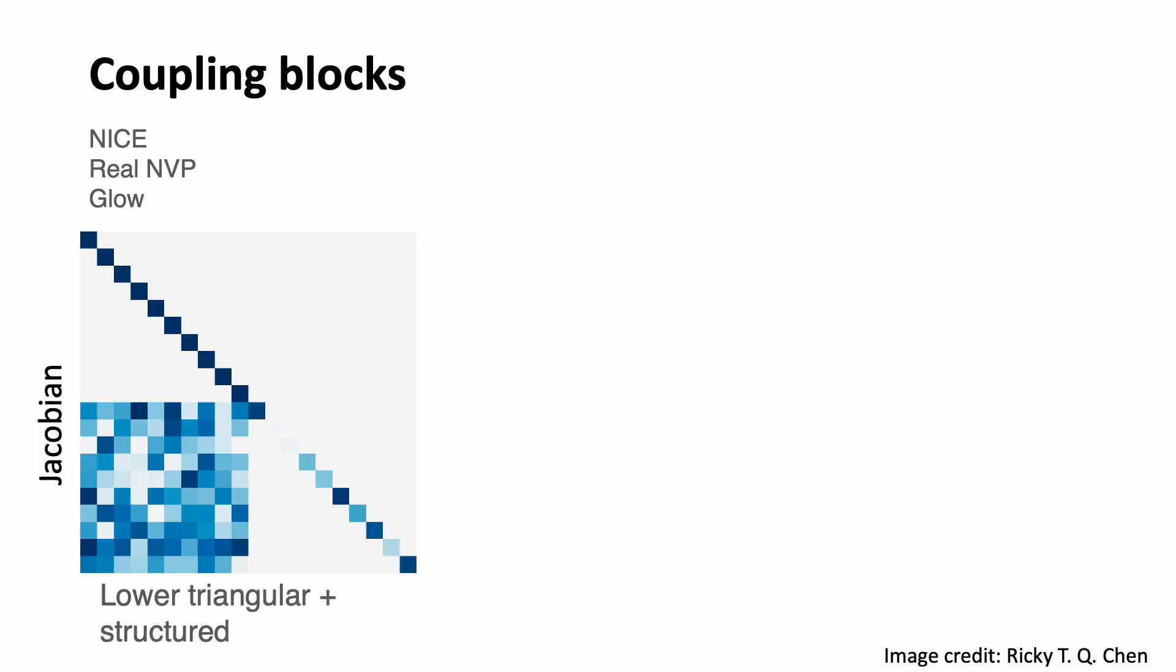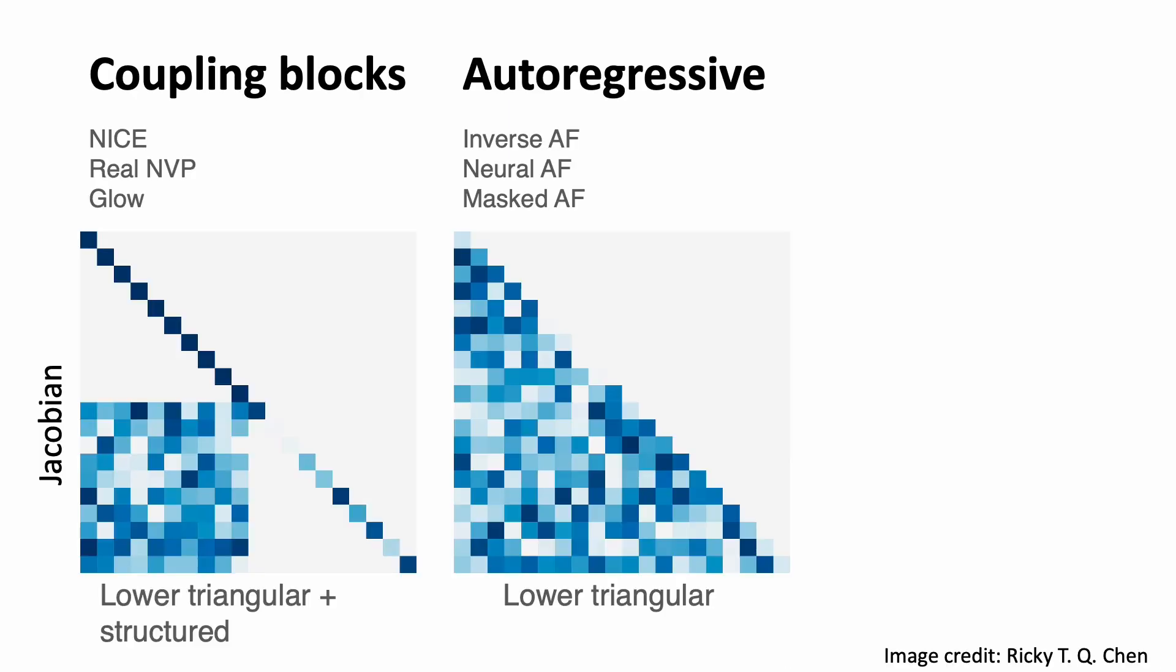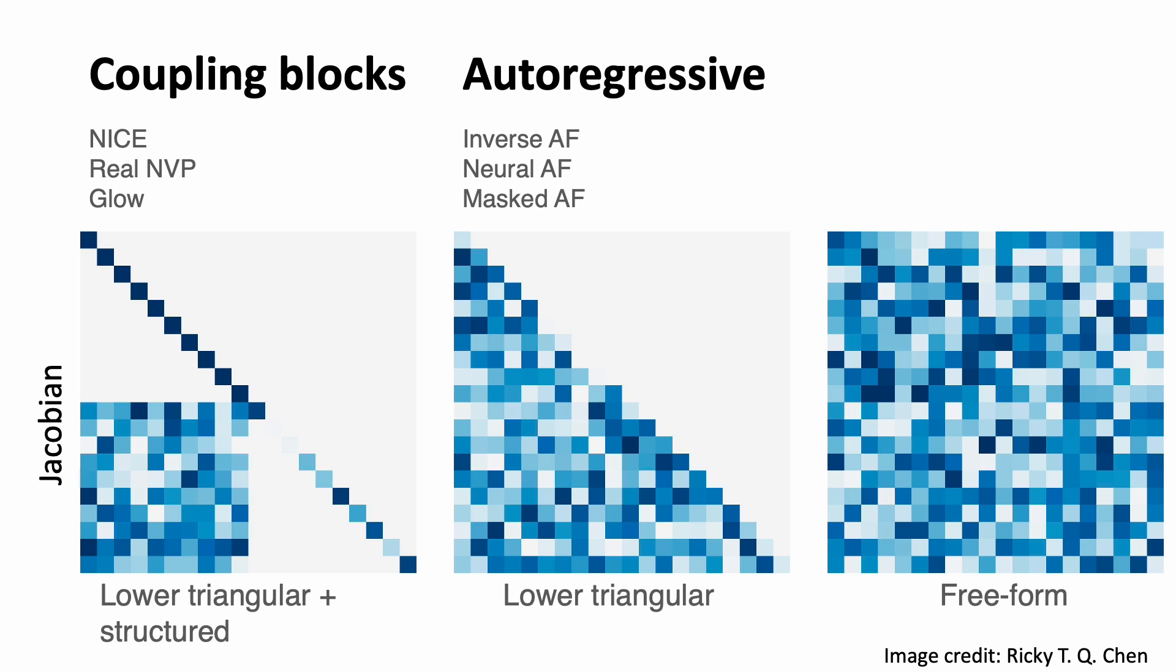So far, we have seen the coupling blocks and the auto-regressive flows. To make the computation tractable, we somehow sacrifice the model's expressiveness. Is it possible to have a free-form Jacobian matrix? This is the idea behind the residual flows.